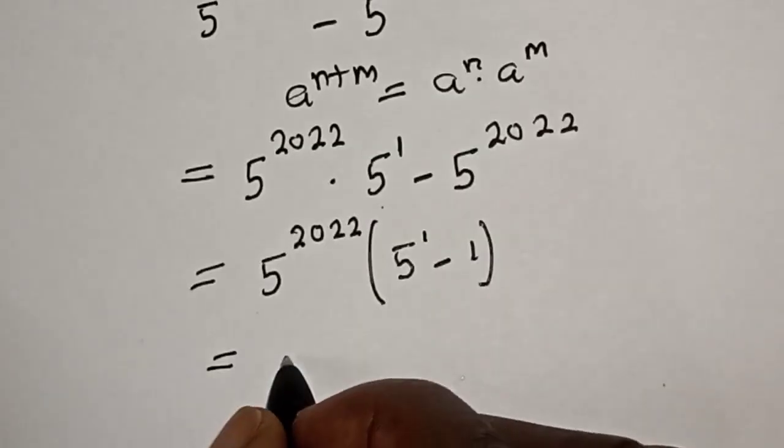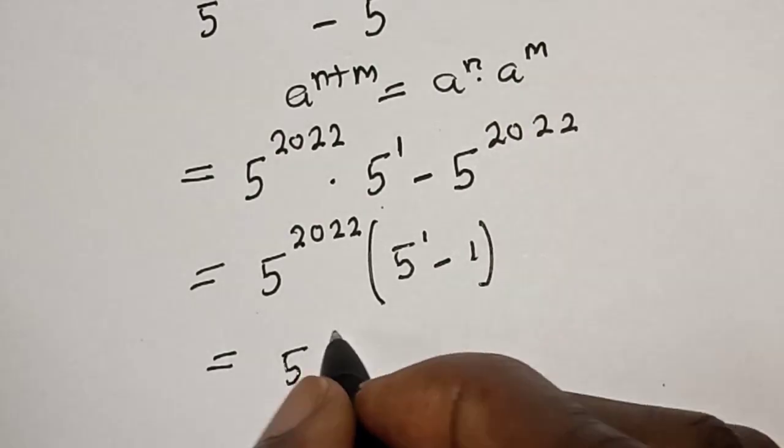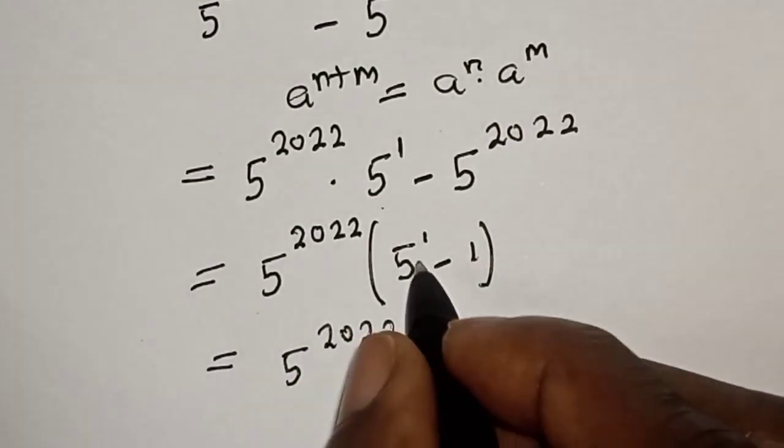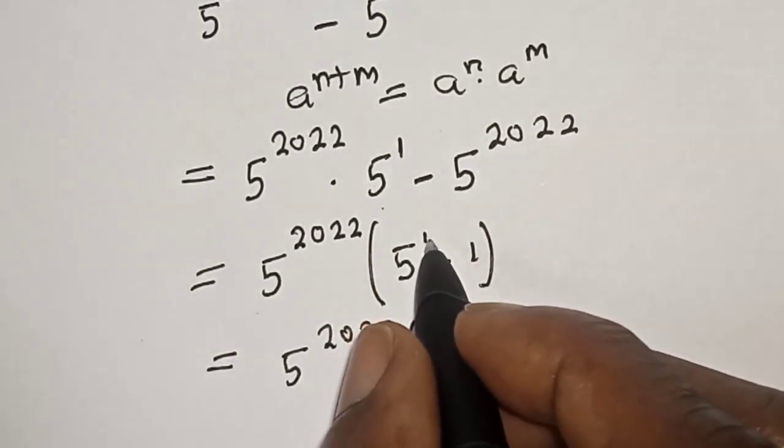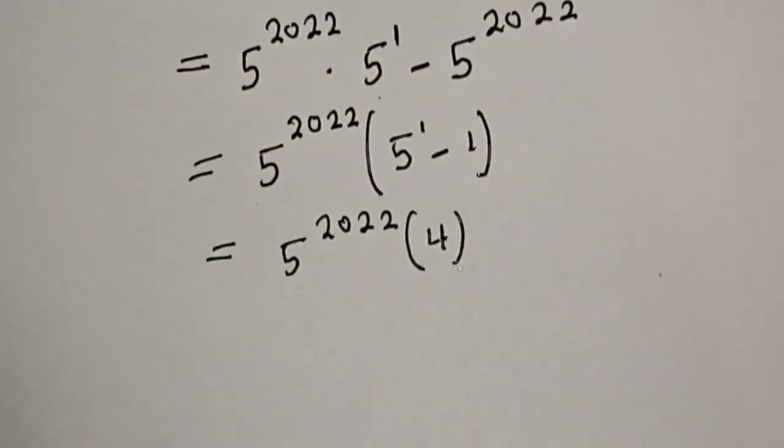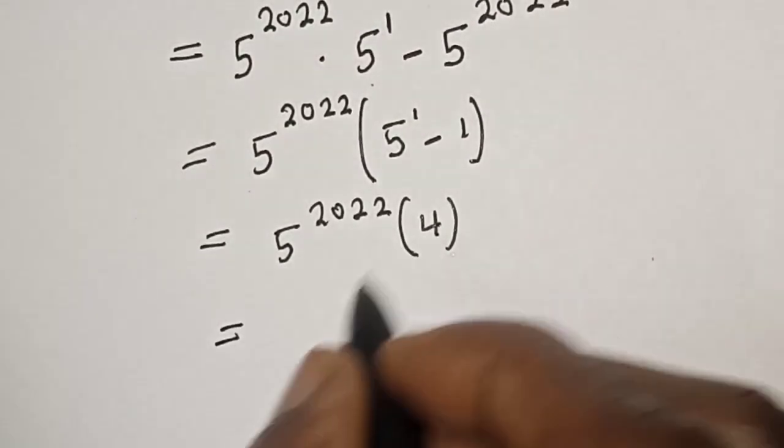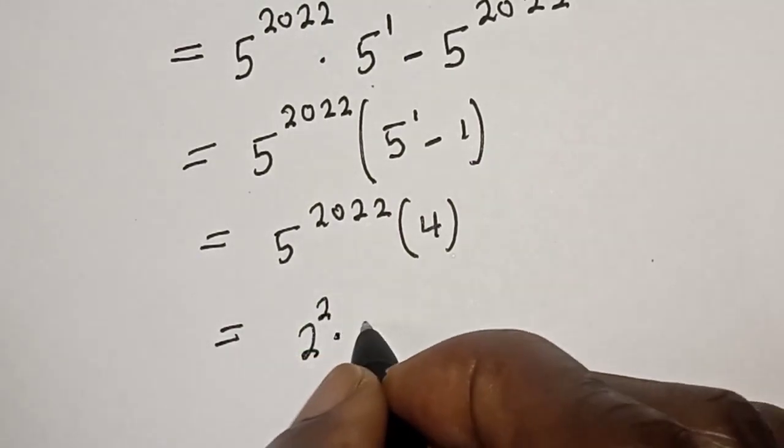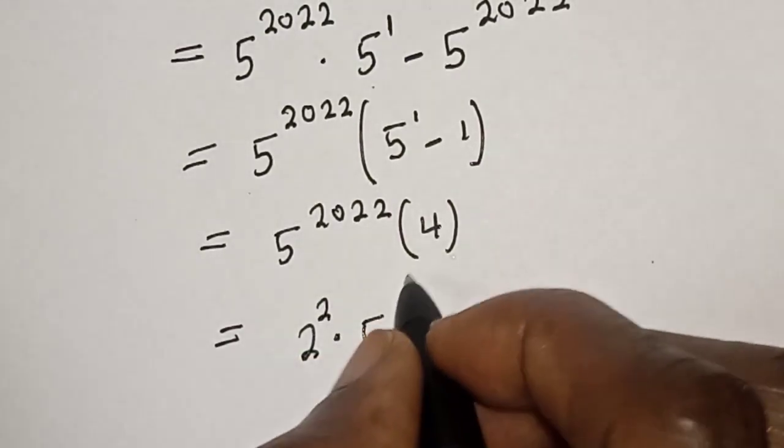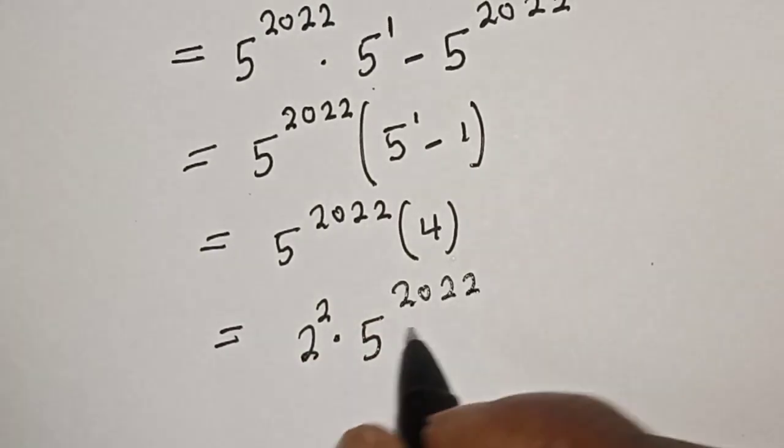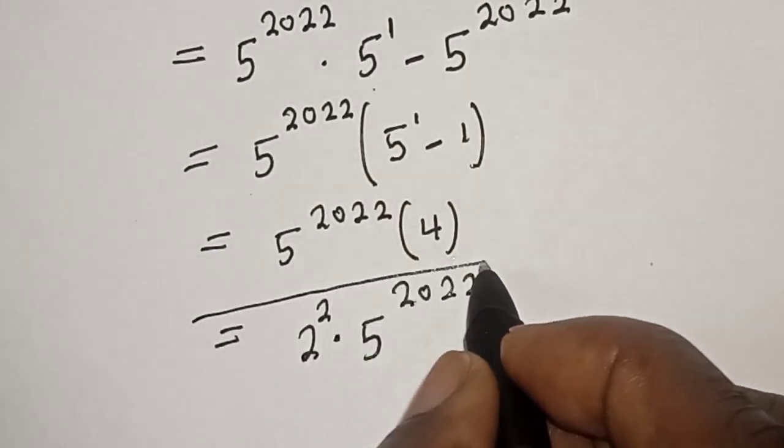And this is equal to 5 raised to power 2022, bracket, 5 raised to power 1 is 5 minus 1. And that is 4. This is equal to 4 is 2 squared multiplied by 5 raised to power 2022. And this is our final answer.